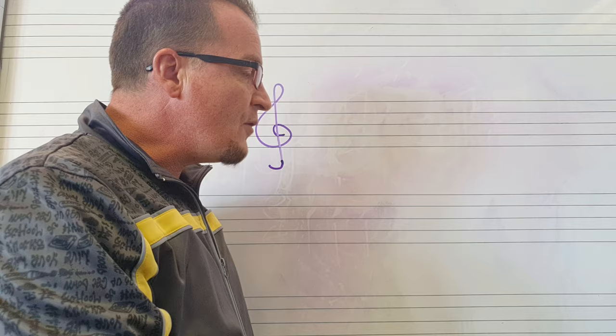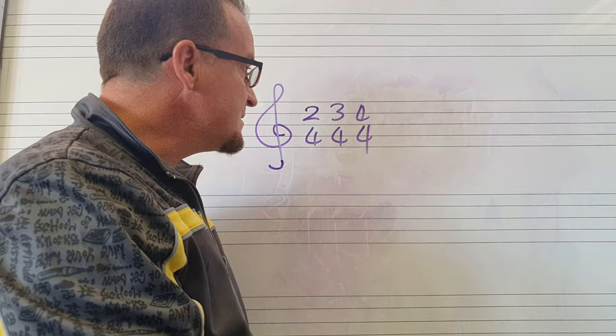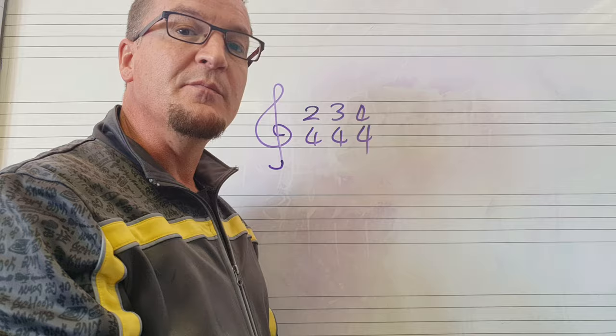The first thing you need to know in Beaming is that there are three time signatures in Grade 1: 2/4, 3/4, and 4/4. The reason I'm taking you back to time signatures is because this has to do with what they call grouping. Grouping has to do with the beats in each bar, and the time signature signifies how many beats there are in each bar.